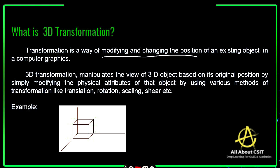A 3D transformation is going to manipulate the view of a 3D object. It tries to change the view of a 3D object based on its original position. We have to consider the original object coordinates, and based on those coordinates only, we modify the object's size or position by applying different techniques like translation, rotation, scaling, shearing, and reflection.